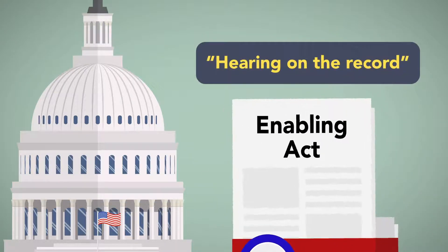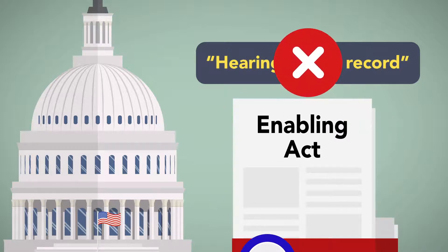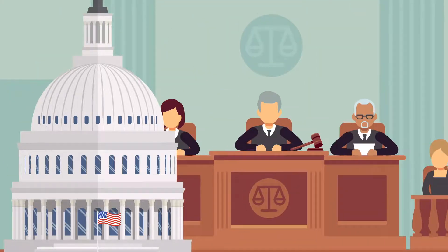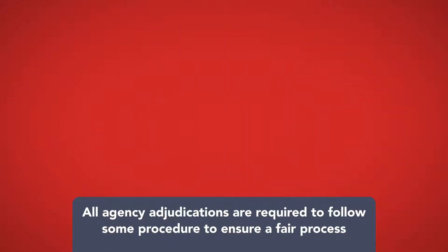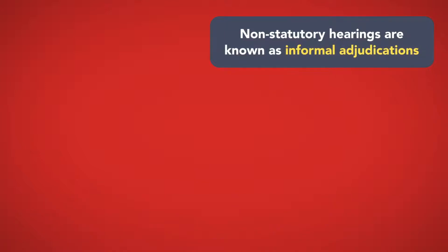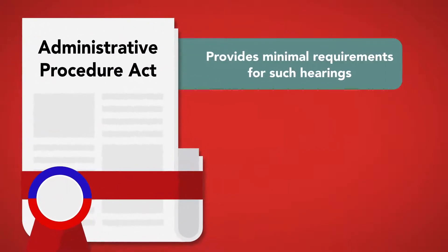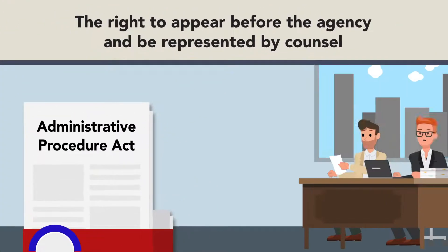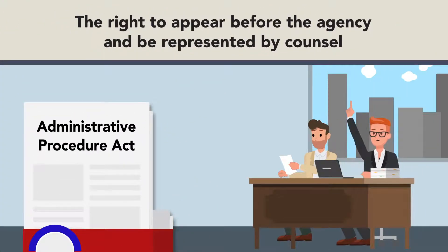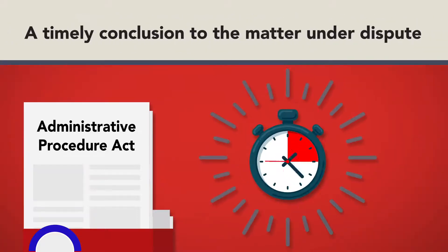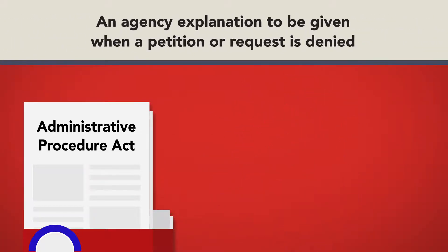If Congress does not use the language of 'hearing on the record,' the formal adjudication process is not required. However, all agency adjudications are required to follow some procedure to ensure a fair process. These non-statutory hearings are known as informal adjudications, and they are generally not the trial-type hearings used for formal adjudications. Instead, the APA provides minimal requirements for such hearings, including the right to appear before the agency and to be represented by counsel, a timely conclusion to the matter under dispute, and an agency explanation to be given when a petition or request is denied.